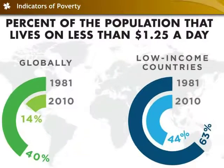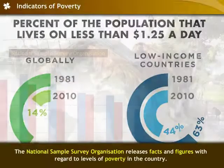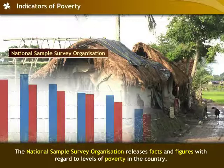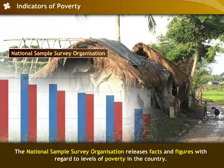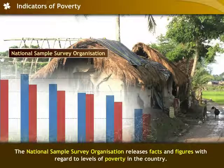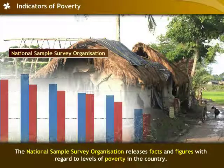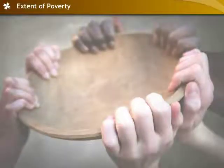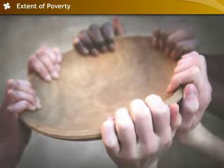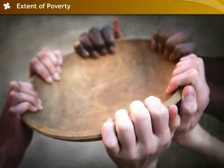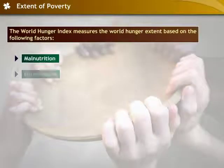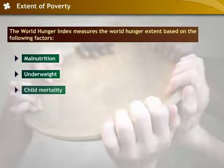This places almost 50% of the Indian population under the poverty line. The National Sample Survey Organization, or NSSO, studies poverty lines on a regular basis. Facts and figures released by the NSSO give insights into the levels of poverty in India. The World Hunger Index measures the world hunger extent based on malnutrition, problems of underweight and child mortality.